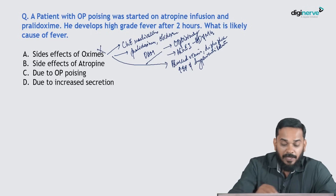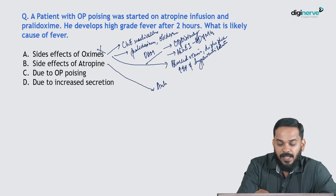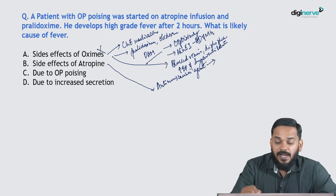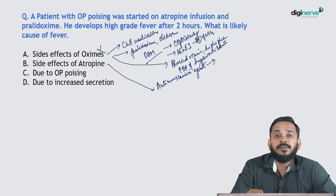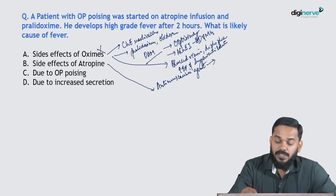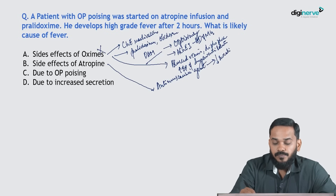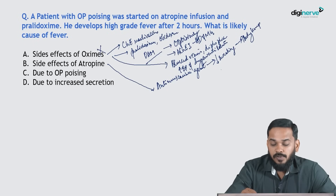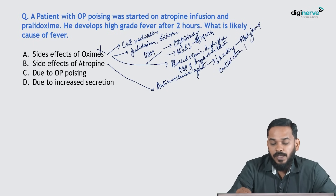Atropine is an anti-muscarinic agent. It blocks muscarinic receptors and counteracts the symptoms of organophosphate poisoning. Atropine reduces sweating, thereby increasing body temperature. Atropine also has central nervous system actions that further increase body temperature.